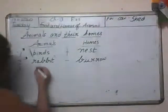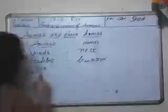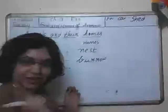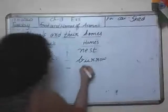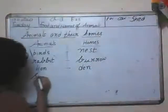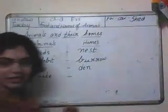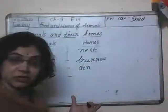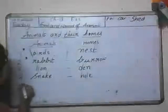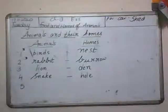Next, lion — what is the home of a lion called? Lion lives in a den — D-E-N. Then snake: snake lives in a hole. Number 5: cow — C-O-W. Cow lives in a shed. The home of a cow is called a shed.